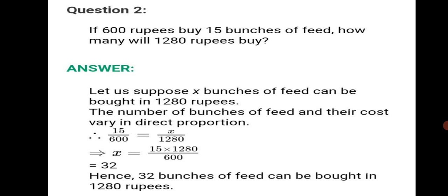15 is the number of bunches of feed, and X is also the number of bunches of feed — they are next to each other. Below is the cost: for 15 bunches, 600; for X bunches, 1280. That's how we form our equation with the equal sign in between. To find the value of X, we cross multiply: X is equal to 15 into 1280 upon 600. The final answer is 32. Hence, 32 bunches of feed can be bought for 1280 rupees.